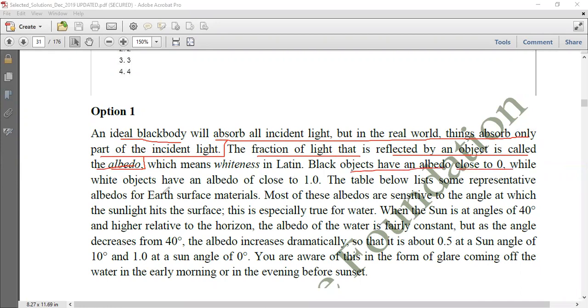Black objects have albedo close to zero, because they absorb everything, they do not reflect anything. While white objects have an albedo close to one, which is actually white snow.